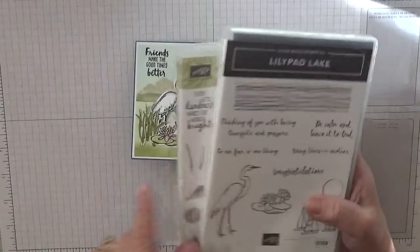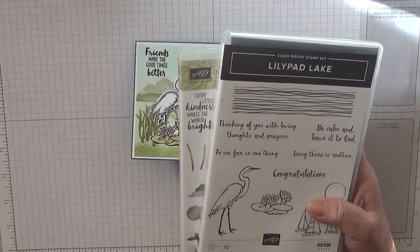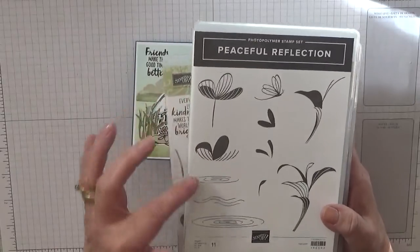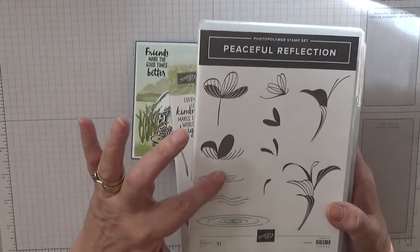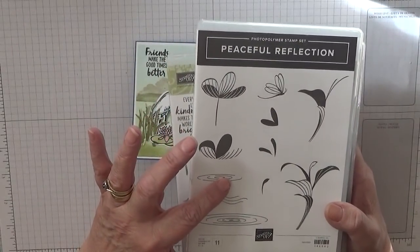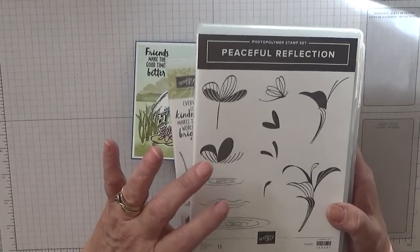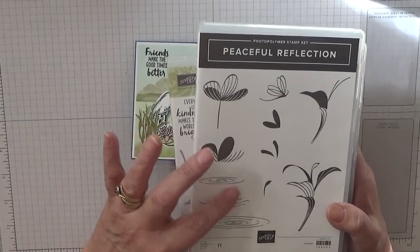That's the Lily Pad and also Peaceful Reflections for the ripples for the pond. That's both of them.